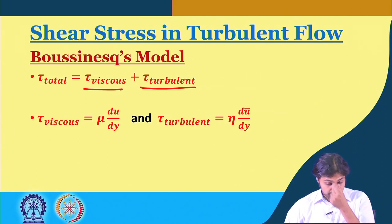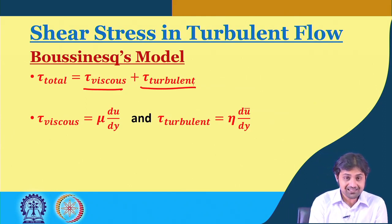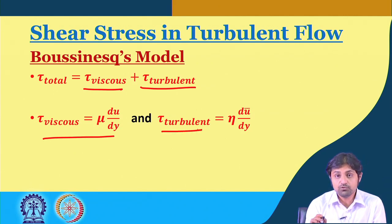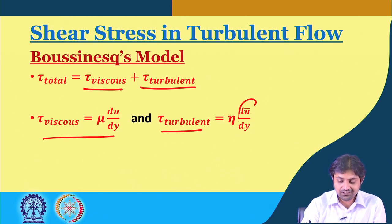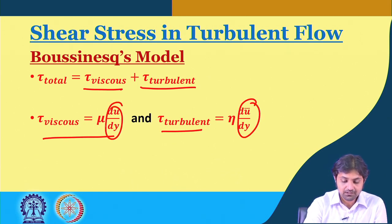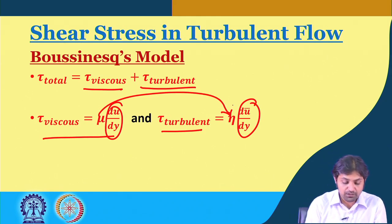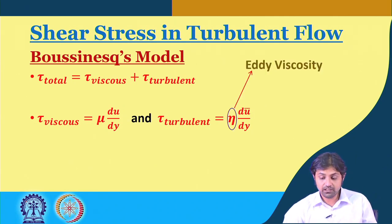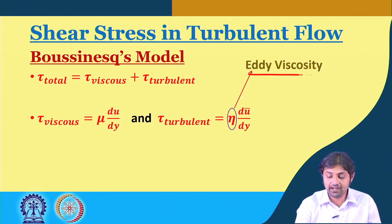Boussinesq says, since τ_viscous = μ(du/dr) for laminar flow, the shear stress due to the turbulence component is η(du/dy). This is similar in form — instead of μ there is something called η, a new coefficient of viscosity called eddy viscosity.